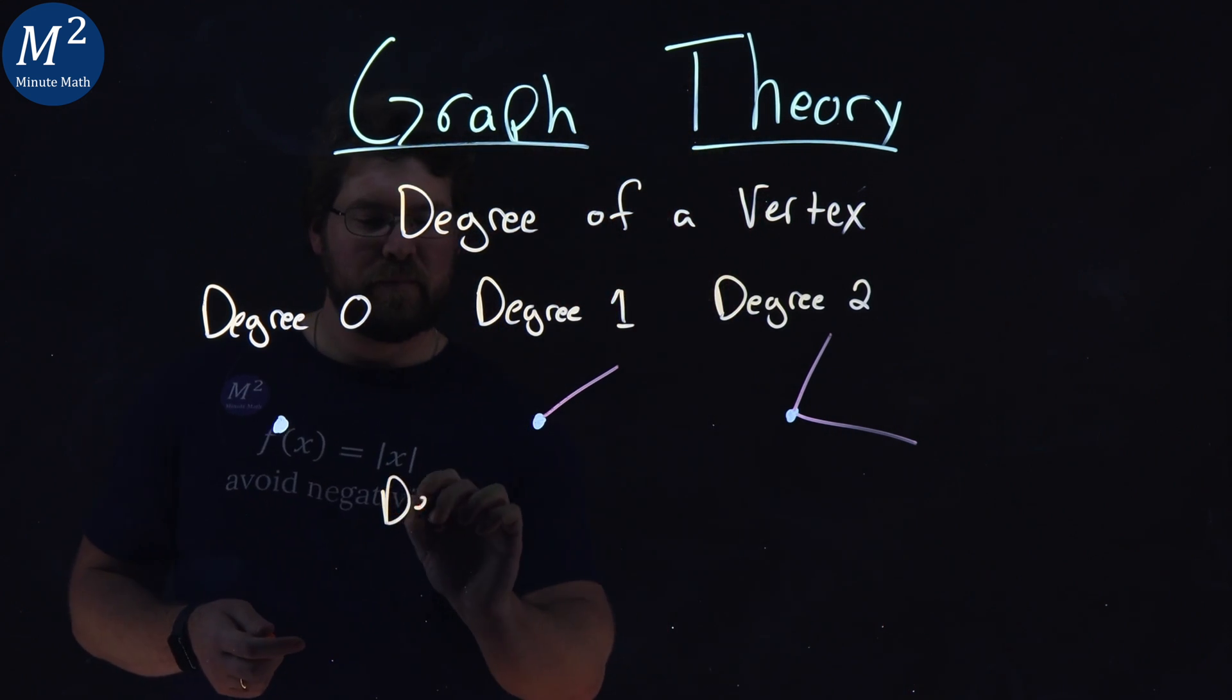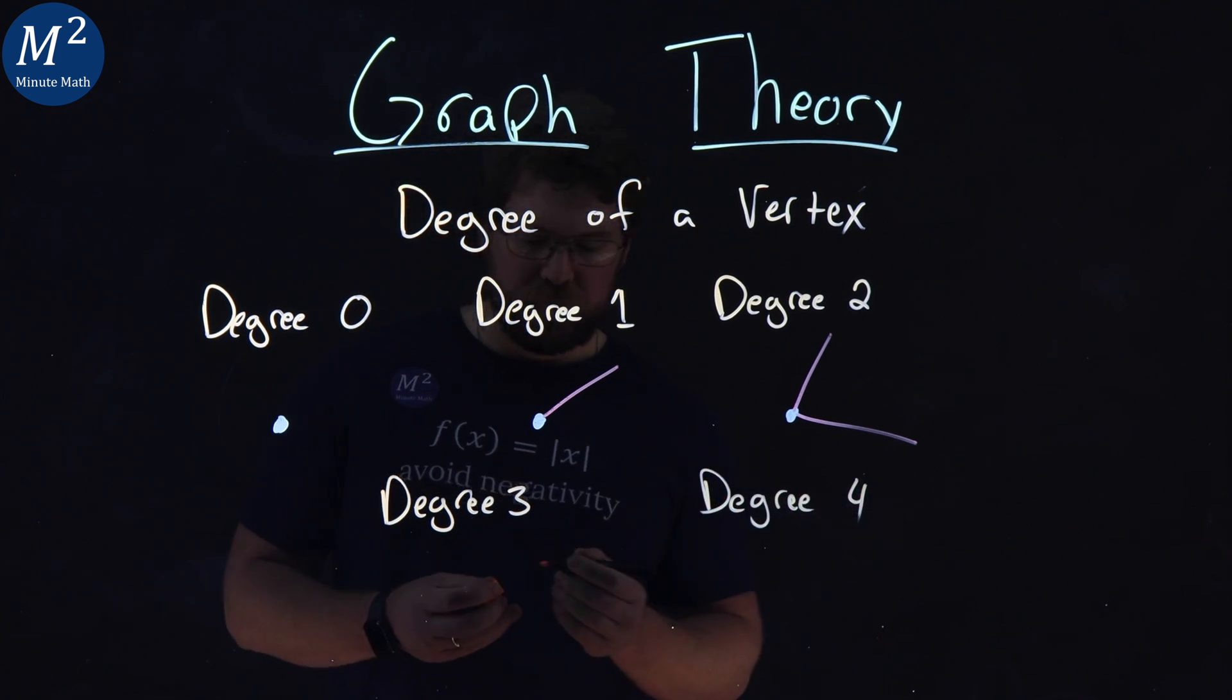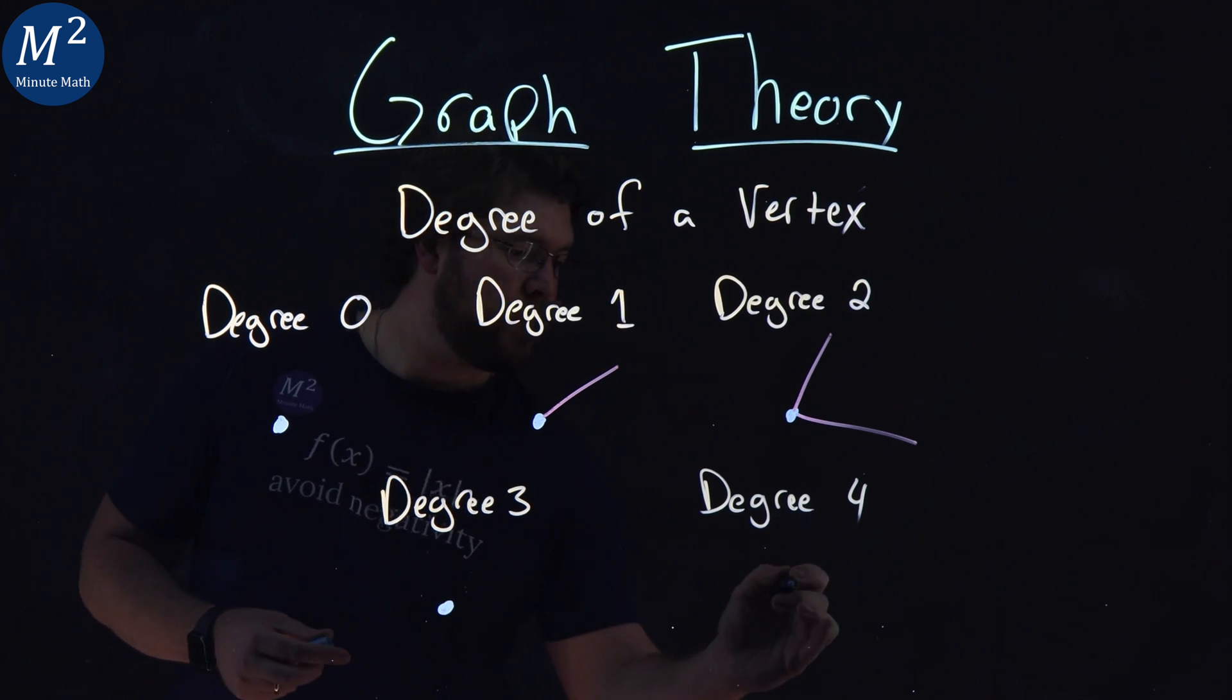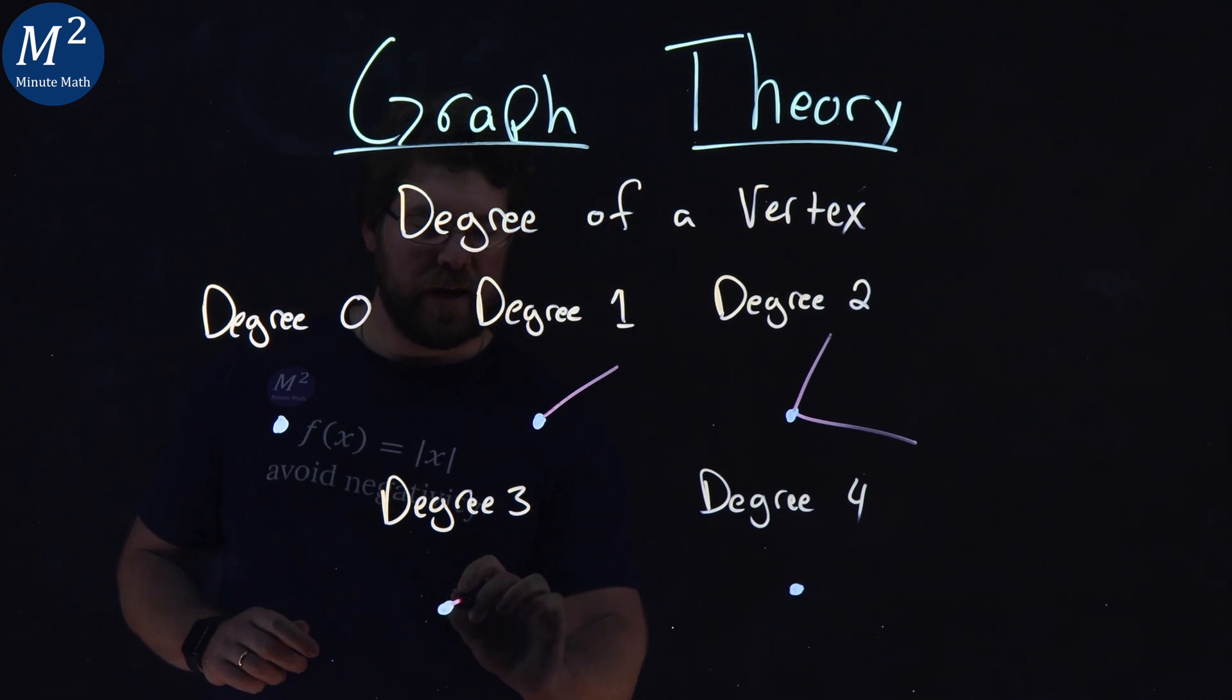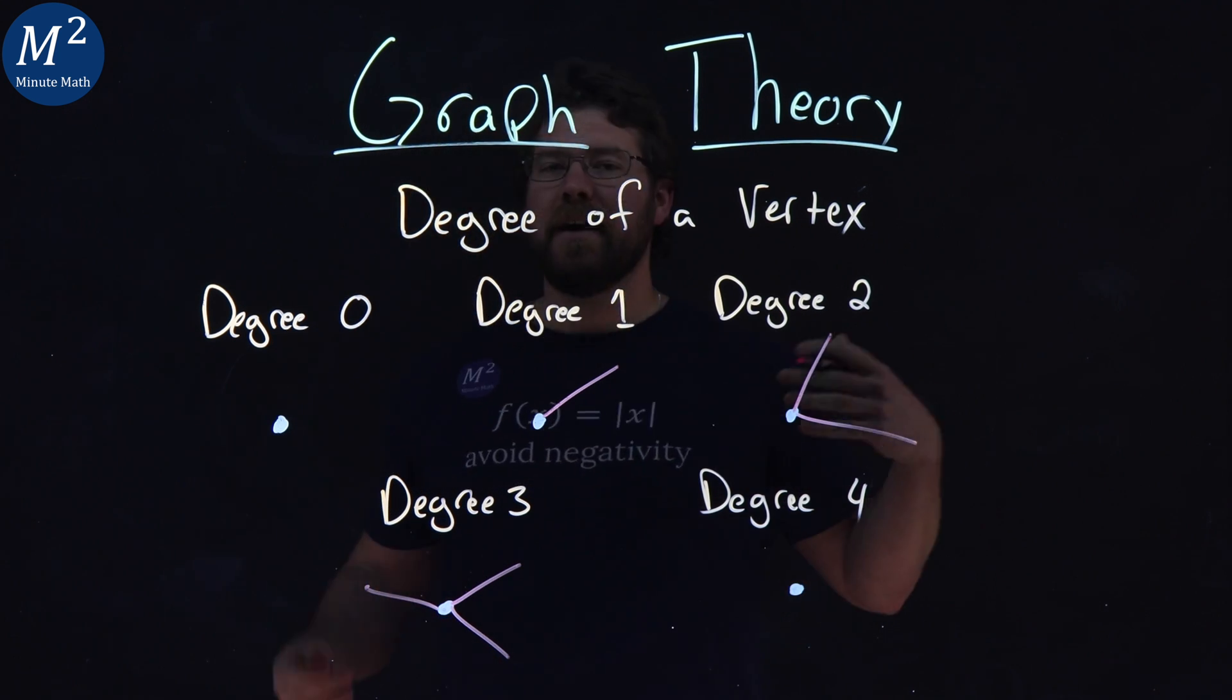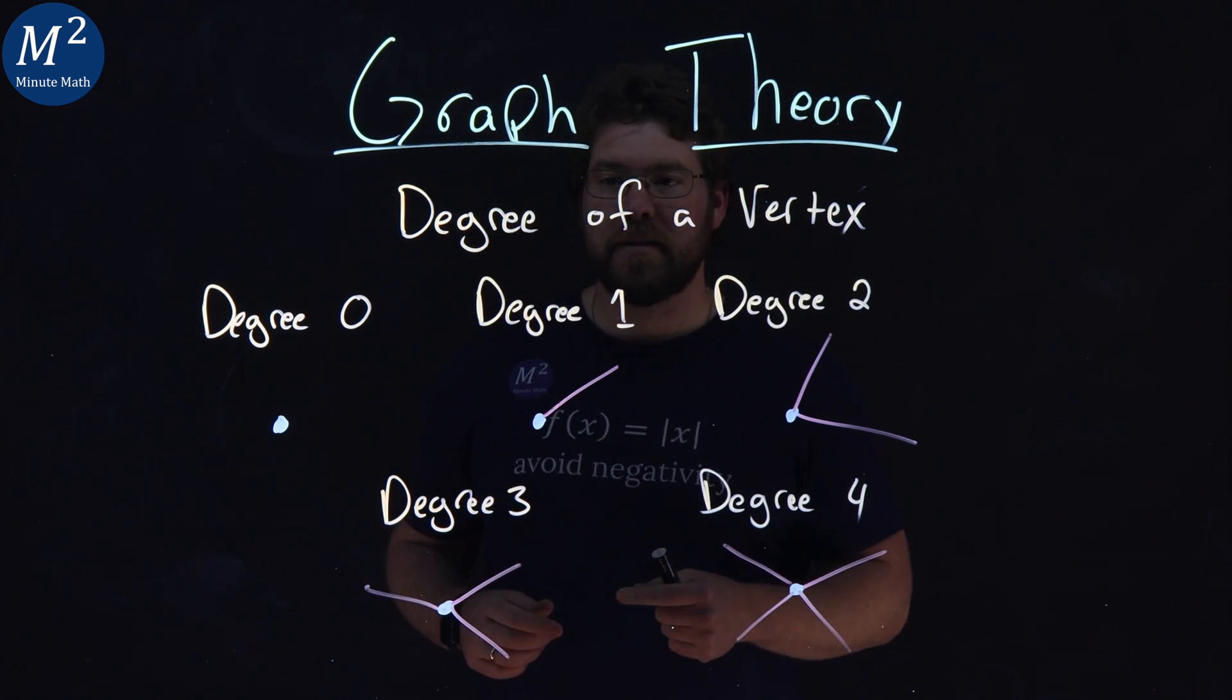Let's go to degree three and degree four. We have our vertex right here for both of them, and a vertex is degree three if it has one, two, three edges that come from that vertex, and you can guess it there. Degree four, one, two, three, four. We have four edges that go to that vertex.